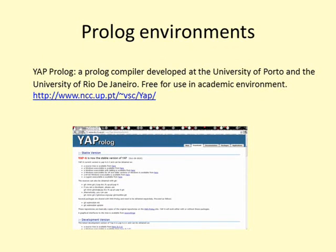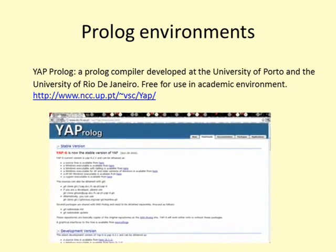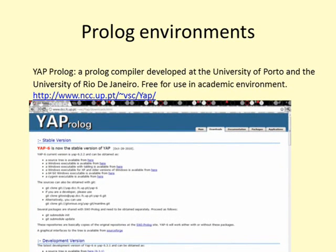YAP Prolog, which stands for Yet Another Prolog, is a high-performance Prolog compiler developed at the University of Bordeaux and the University of Rio de Janeiro. It has been developed since 1985, follows the Edinburgh tradition, and is compatible with ISO Prolog and SISTUS Prolog. Its Prolog engine is based on the Warren Abstract Machine. The original version was written in Assembly, C, and Prolog, but later emulators supported the VAX, SPARC, and MIPS architectures.